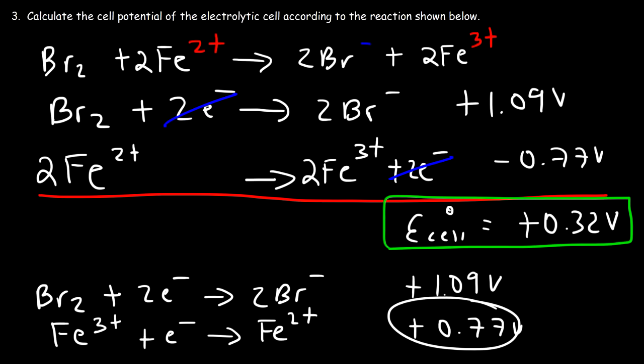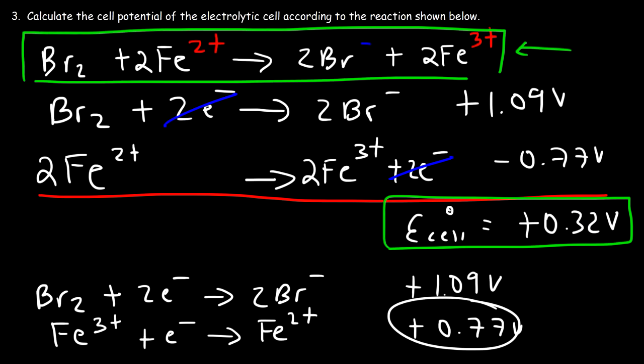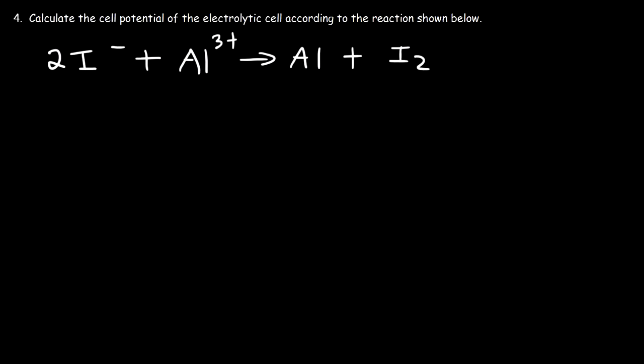For an electrolytic cell, you calculate the cell potential based on the way the reaction is written — it can be positive or negative. To get the answer, we don't necessarily need to fully balance the half reactions; we just need to make sure the electrons are on opposite sides and that it adds up to the reaction as written. But you can balance it if you want.